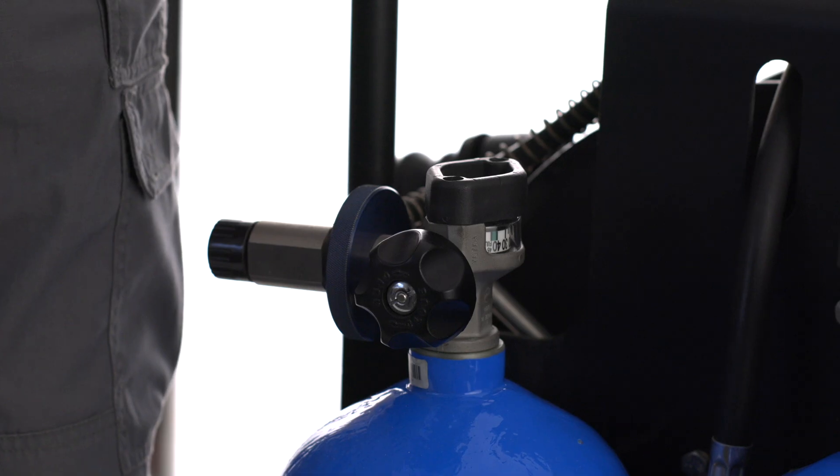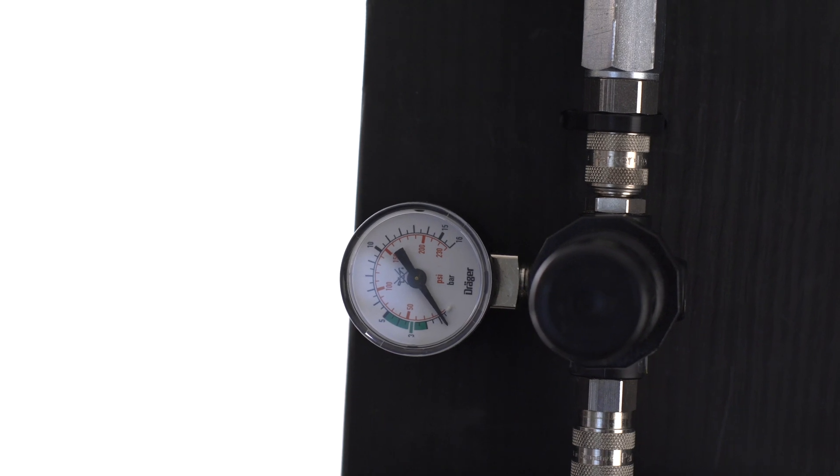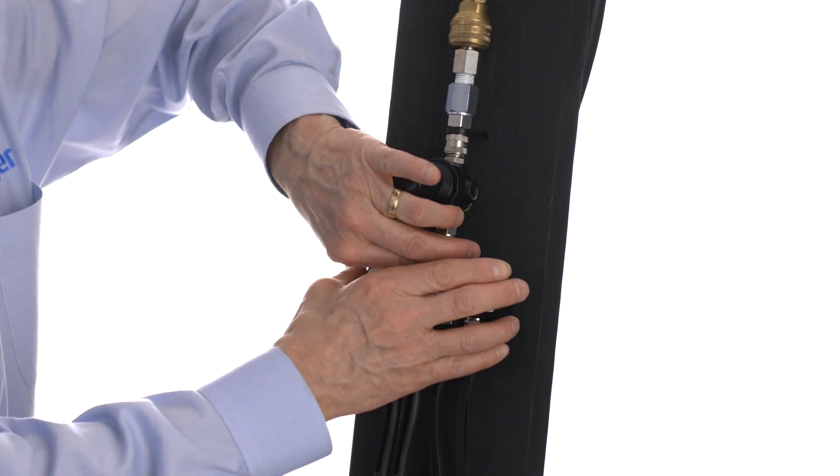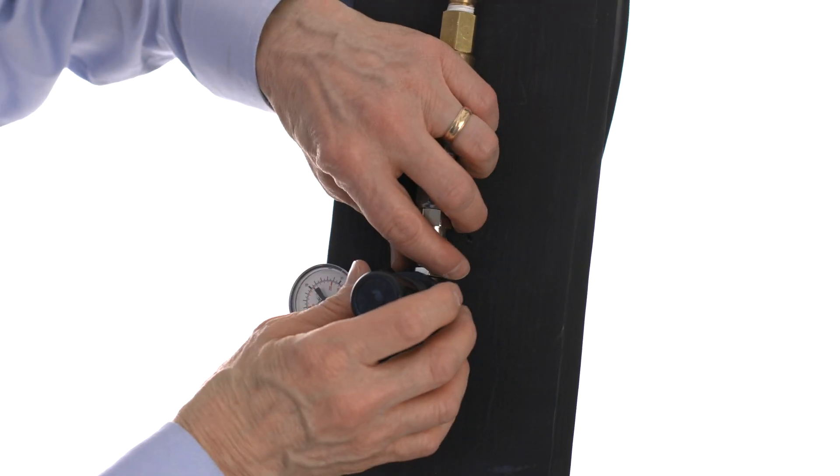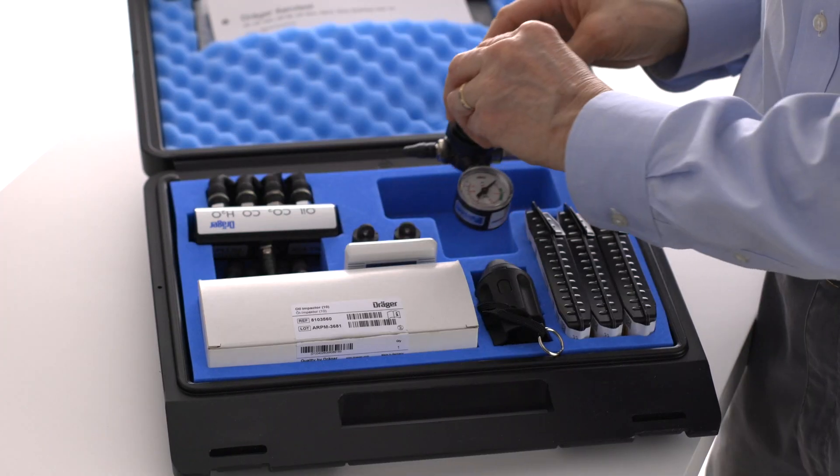Once the tests are complete, you can turn off the air cylinder valve. When the pressure bleeds down to zero, disconnect the measuring device and remove each part, storing them back in the case until next use.